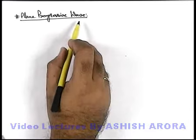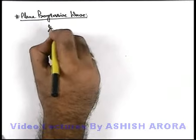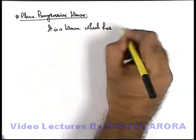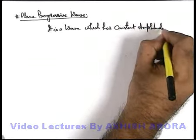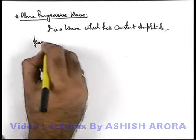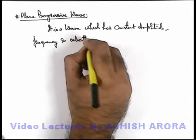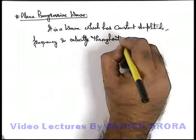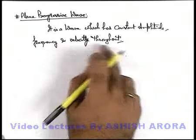Let us discuss a specific wave termed as a plane progressive wave. A plane progressive wave can be transverse or longitudinal. It is a wave which has constant amplitude, frequency, and velocity throughout, and is termed as a plane progressive wave.